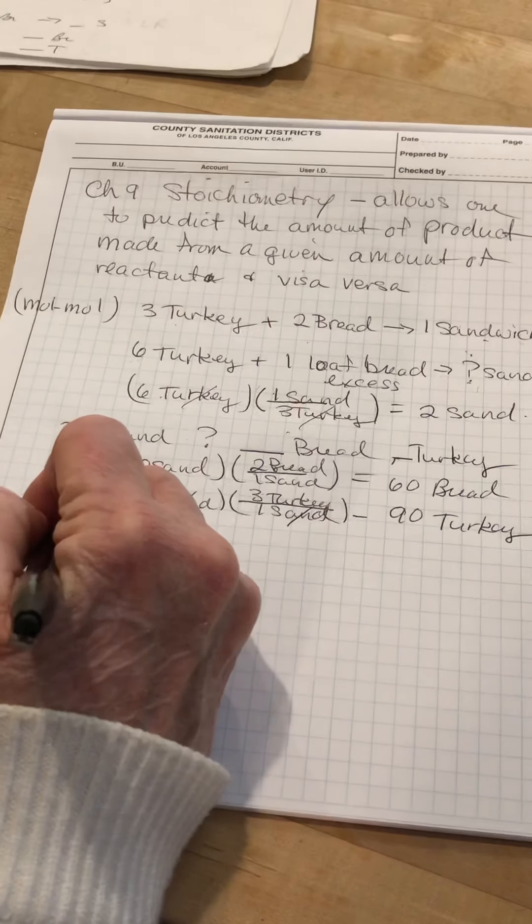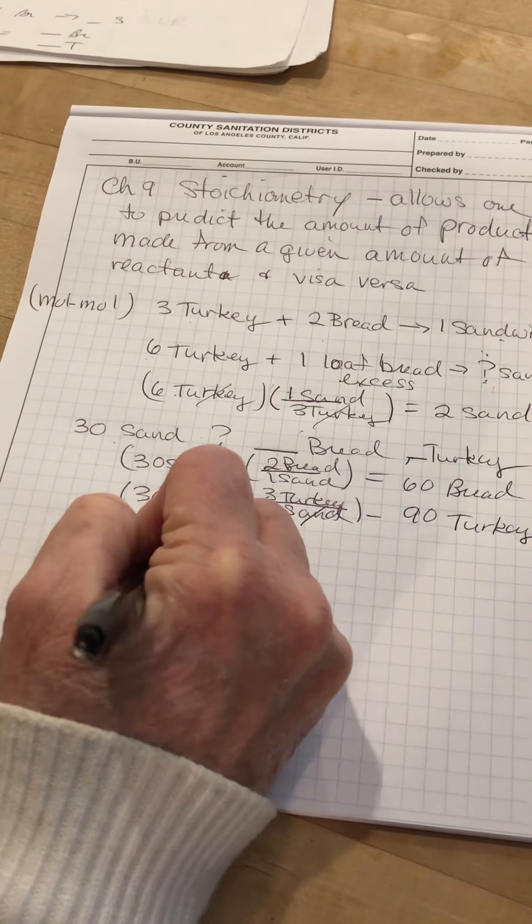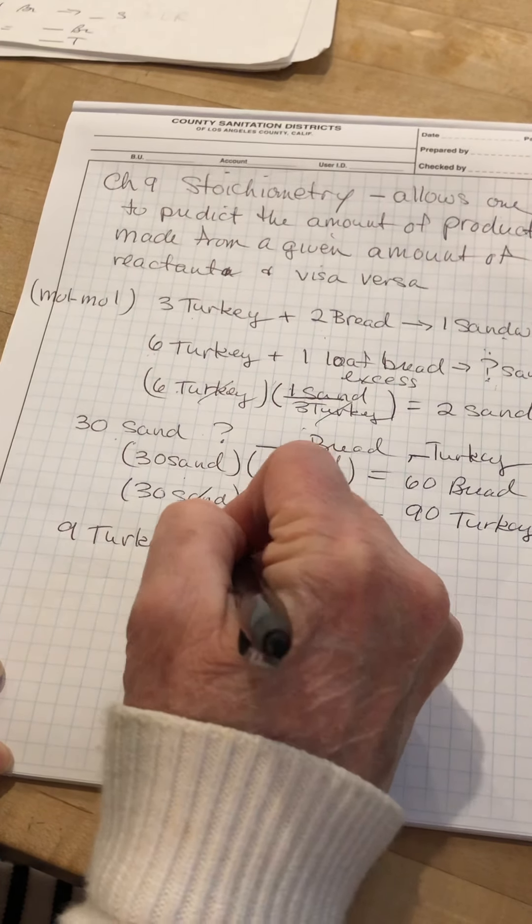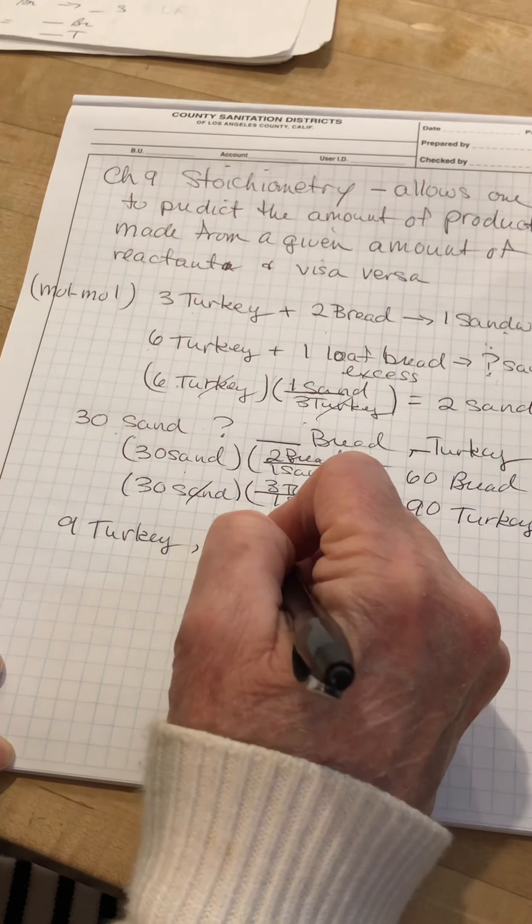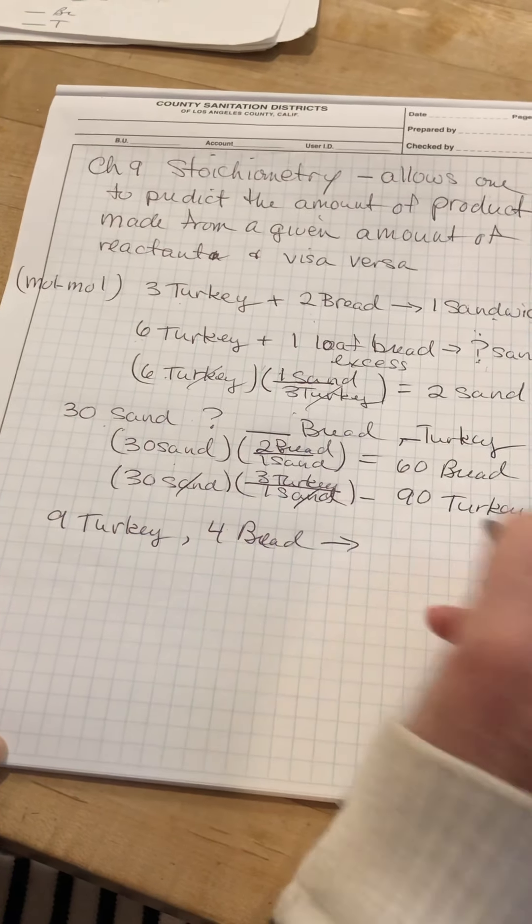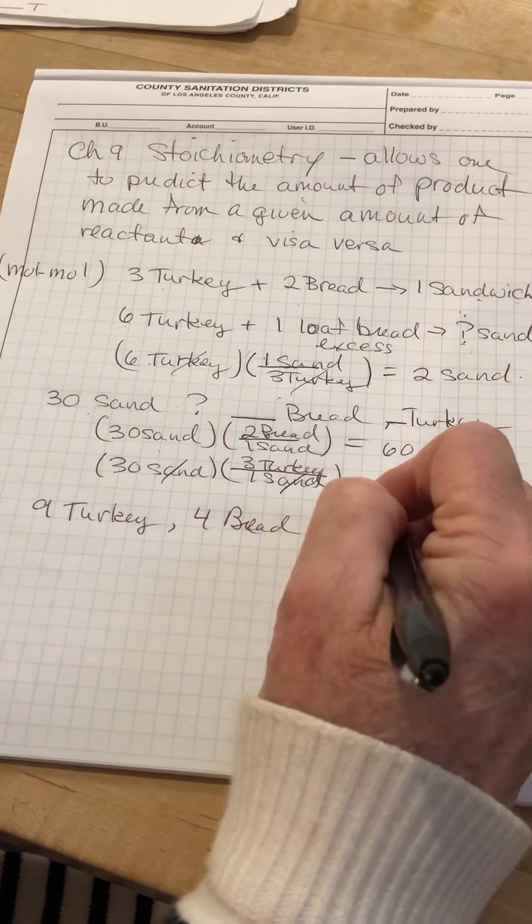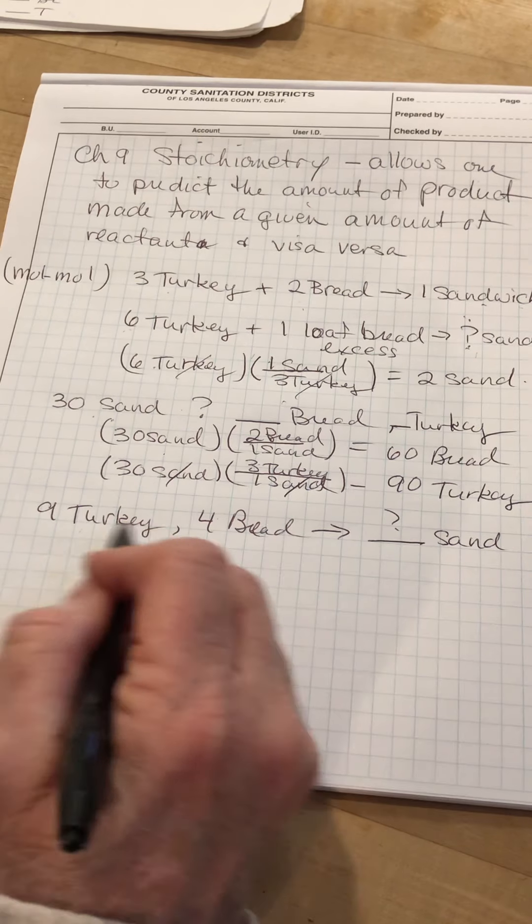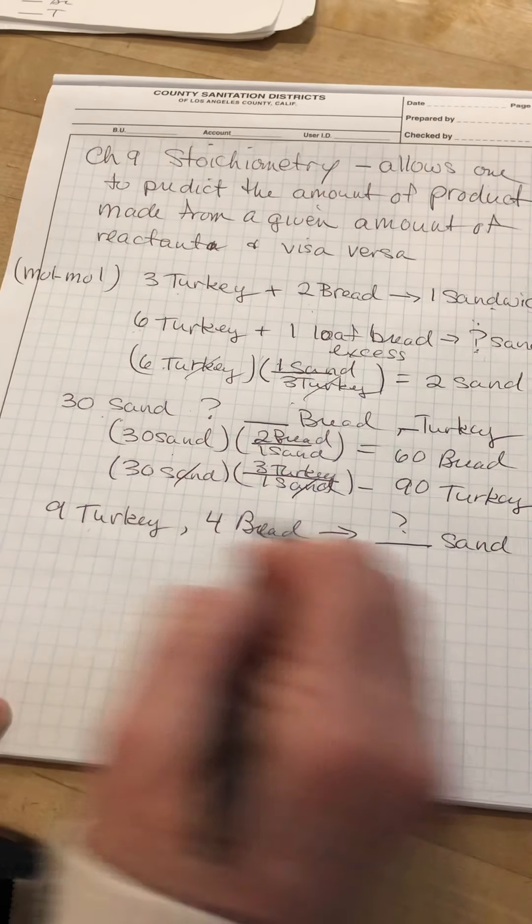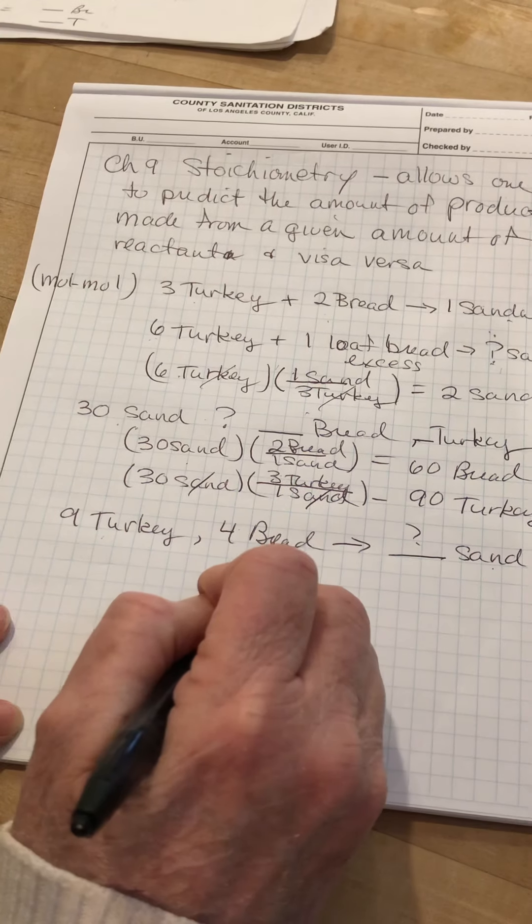Okay, so here you have nine slices of turkey. And you have four slices of bread. And with this, B-R-E-A-D, with this particular combination, we want to know how many sandwiches we can make. In this case, we need to do two problems. We need to figure out how many sandwiches we can make with nine slices of turkey and with four slices of bread.